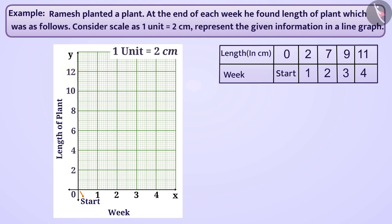Now, we will mark the data by points. Initially, the plant length is 0 in position 0. Therefore, we will mark the point at 0. Similarly, the length of plant in week 1 is 2 cm. To denote this length, we will mark the point at the intersection of the vertical line of week 1 and the horizontal line of 2 cm.